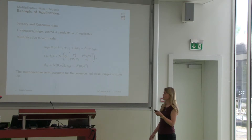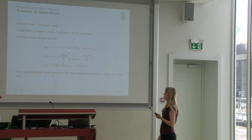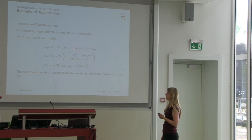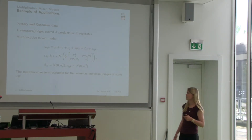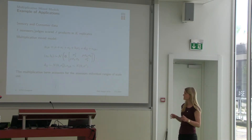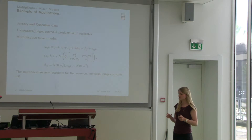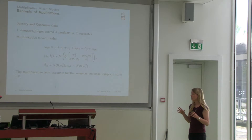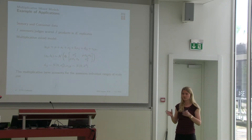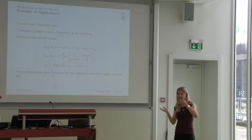Here we're interested in comparing the different products, so therefore the products are our fixed effects. We have the fixed effect of the product and the random effect of the different assessors, and then we have the multiplicative term where the regression coefficient is dependent on the different assessors. The reason for using this model with this type of data is that the multiplicative term accounts for the different use of the scale that the assessors are doing, because some of the assessors might use a larger part of the scale than the other assessors.